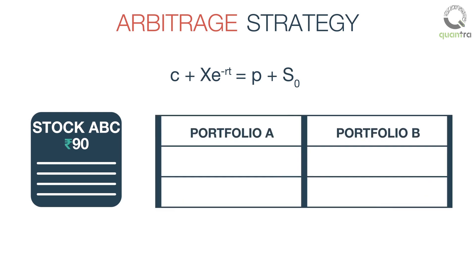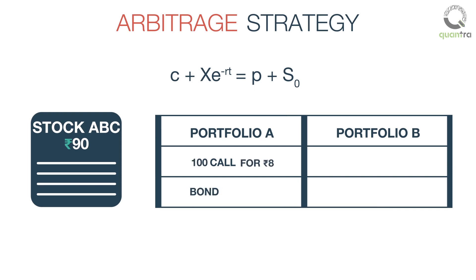In portfolio A, we buy two things: a call option and a zero-coupon bond. In the put-call parity equation, the left-hand side represents portfolio A. We buy the call option on the stock ABC with a strike price of Rs.100, priced at Rs.8, and a zero-coupon bond trading at Rs.88.56, which will be worth Rs.100 at the option expiry time.